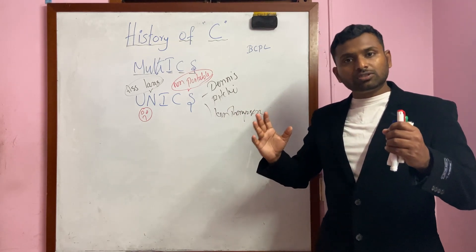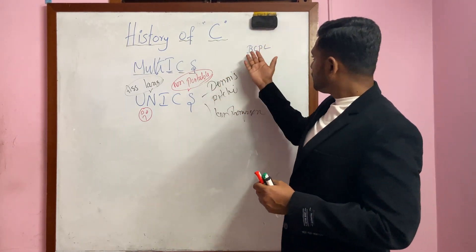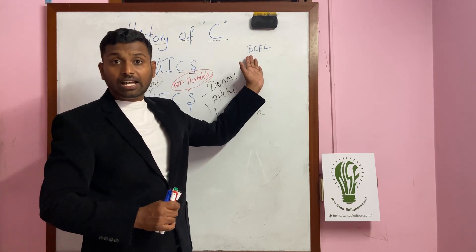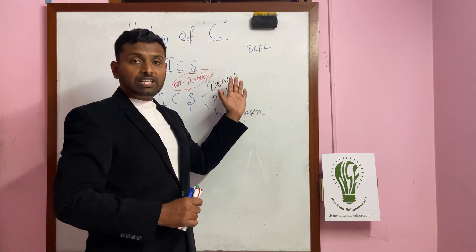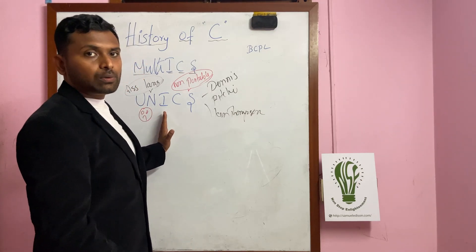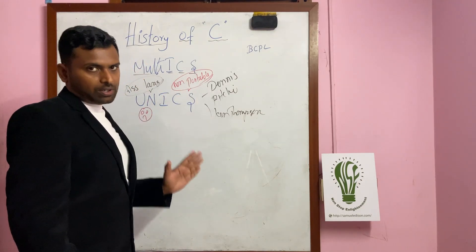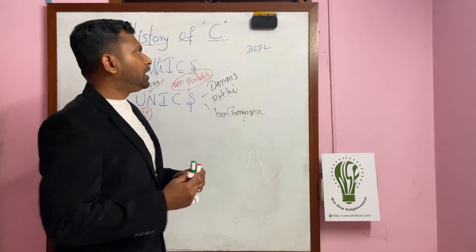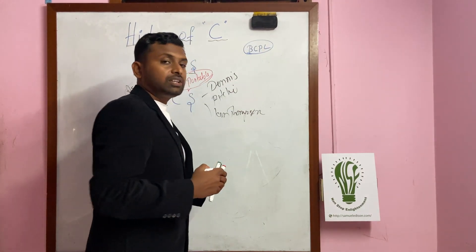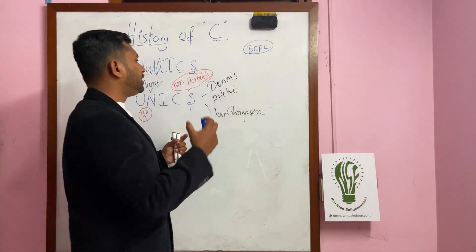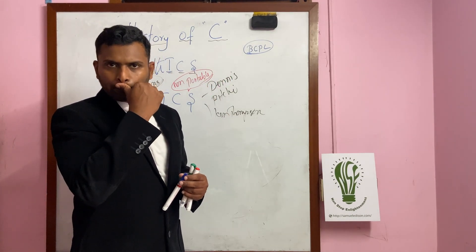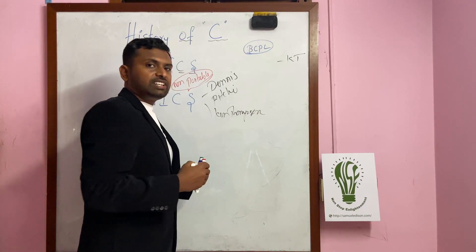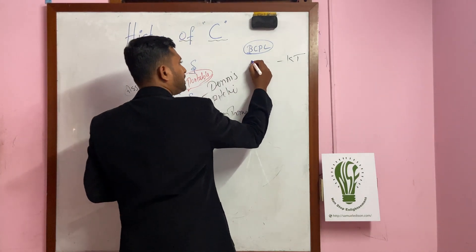So what Dennis Ritchie and Ken Thompson did is that, instead of trying with an already existing language, they thought: why don't we develop a new programming language, and with the help of that new programming language we can redesign UNIX? Considering BCPL as their base, they started developing their own programming language. Ken Thompson completed his research on developing a new programming language and he named that programming language B.